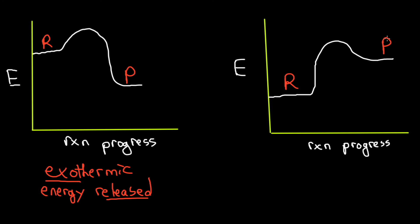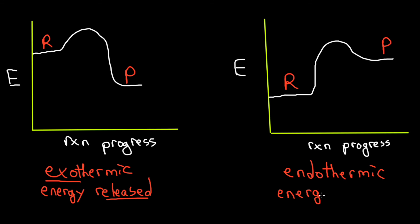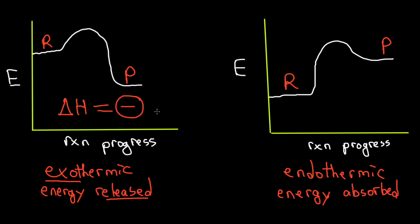The opposite occurs when products have more energy than the reactants — that energy must come from the environment. The environment gives energy to the system in what is called an endothermic reaction, where energy is absorbed. Heat energy is measured by enthalpy, marked by delta H. In an exothermic reaction, delta H is a negative number in kilojoules. In an endothermic reaction, delta H is a positive number in kilojoules, because the reaction gains energy.